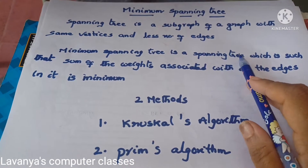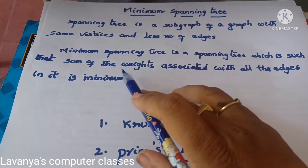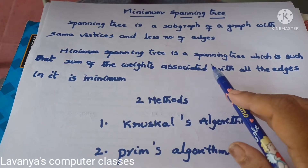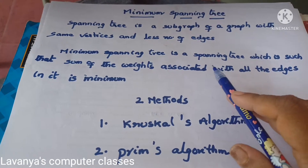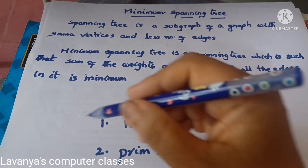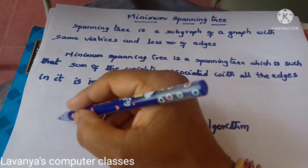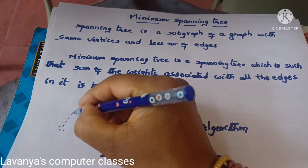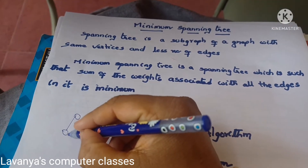What is a minimum spanning tree? A minimum spanning tree is first of all a spanning tree, selected such that the sum of the weights associated with all the edges is minimum.